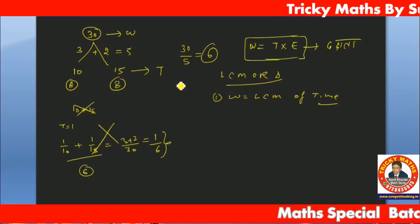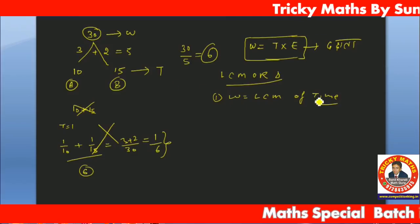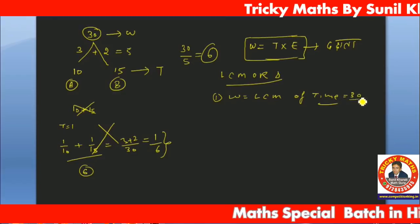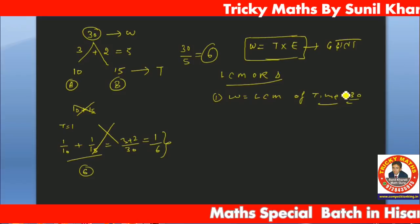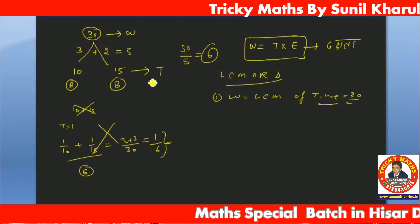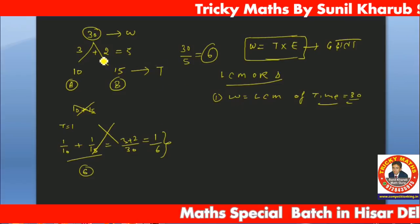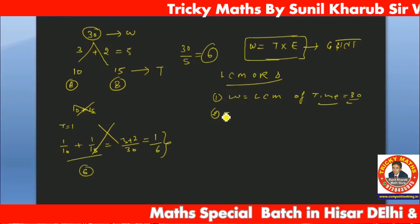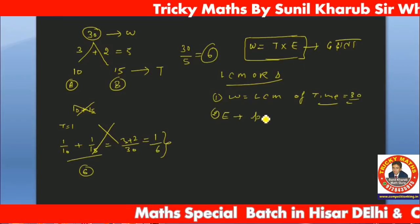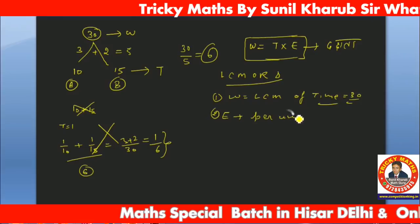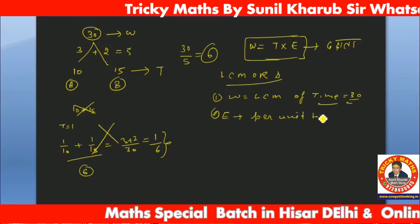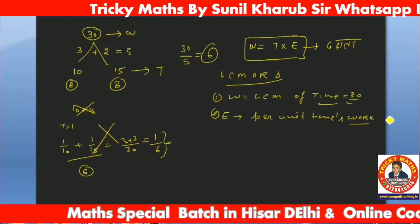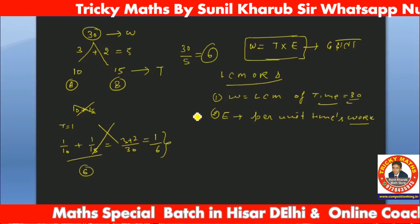Work is equal to LCM of time. Efficiency is work per unit time - efficiency means per unit time work done.